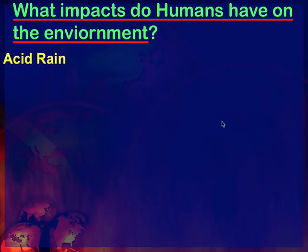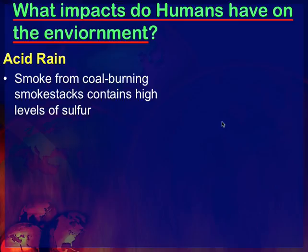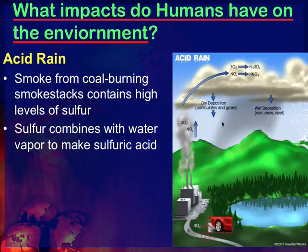Let's talk about four impacts before we get into the two major ones. First: acid rain. If you're in Indianapolis, on the south side on 465, there are two huge smokestacks from a company called IPL, which provides us with our power here in the city.